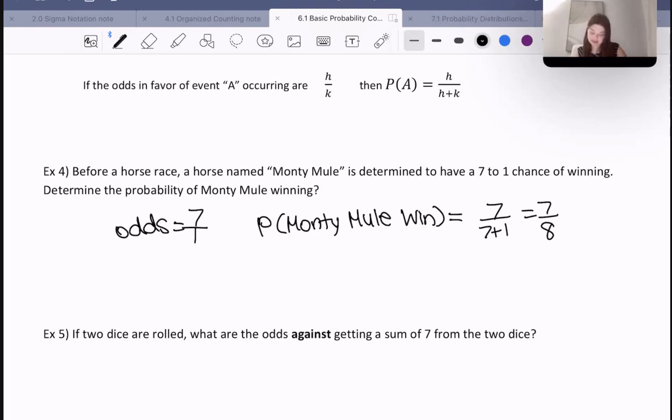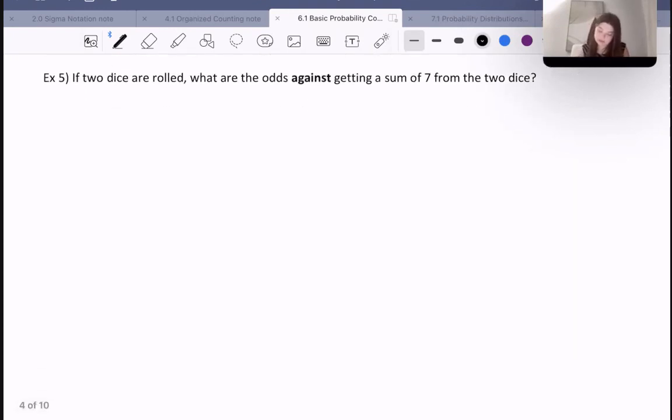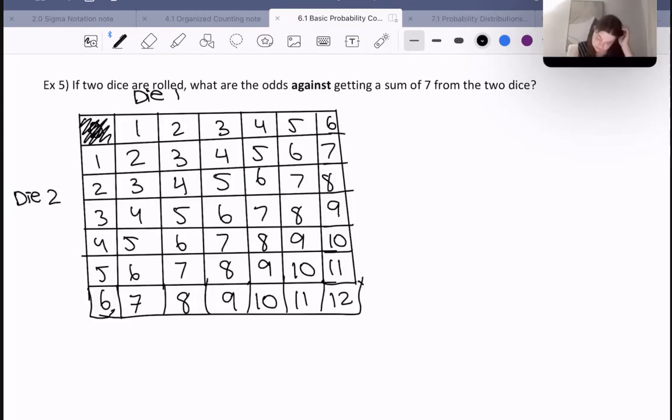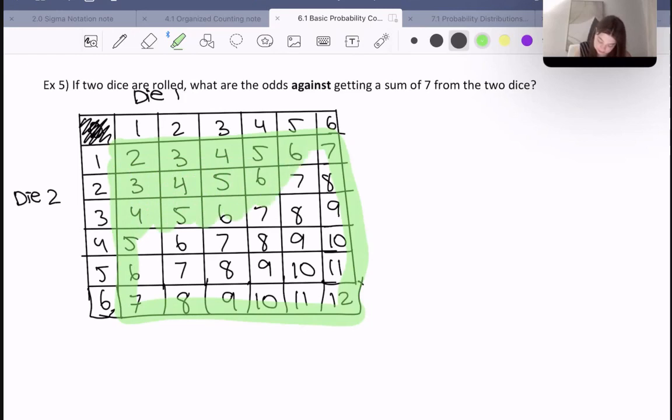The next one says if two dice are rolled, what are the odds against getting a sum of 7 from the two dice? I created an addition table. Die one is either 1, 2, 3, 4, 5, or 6, and die two is either 1, 2, 3, 4, 5, or 6. In the middle of this table, in the highlighted area, these are the sums when we add the two numbers.